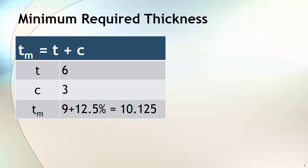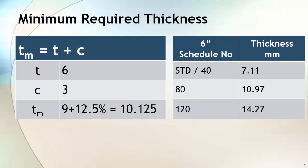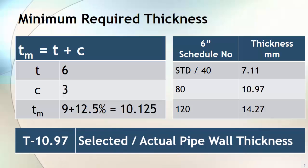But hold on — API 570 says that while selecting your minimum required thickness, you have to consider negative pipe manufacturing tolerance, which is 12.5% for most cases. So by doing all this math, we will get 10.125 mm. Now 10.125 is not a standard pipe thickness. Looking at this table, Schedule 80 is the nearest thickness that matches our minimum required thickness. That 10.97 mm will become our selected pipe thickness, or actual pipe thickness.